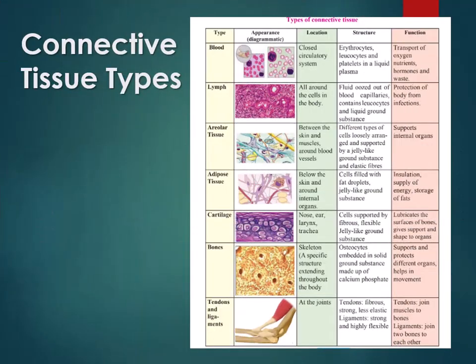The different types of connective tissues include blood, lymph, loose connective (areolar), adipose, cartilage, bone, tendons, and ligaments. These vary enormously — you wouldn't think blood and bone belong to the same category since blood is liquid and bone is hard solid, but they're both considered connective tissue.